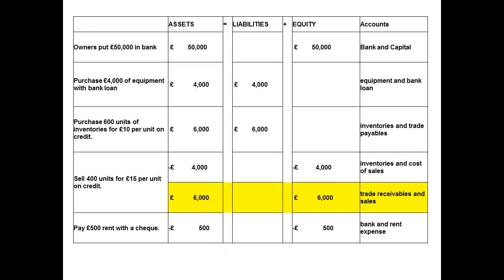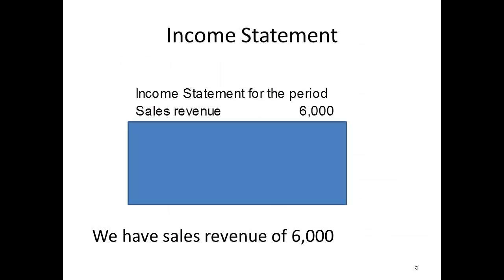If we go back to our summary of transactions, you will see that I have highlighted a transaction for sales. This is the only sale that was made, so the figure that I am going to use for sales is £6,000. I put this figure as the first figure on my income statement — total sales revenue of £6,000.